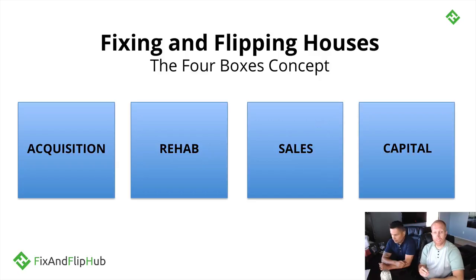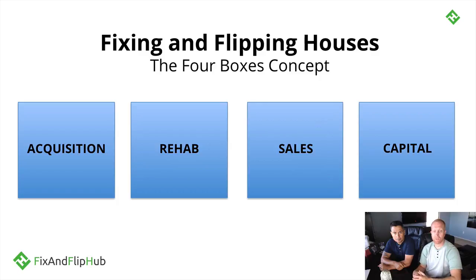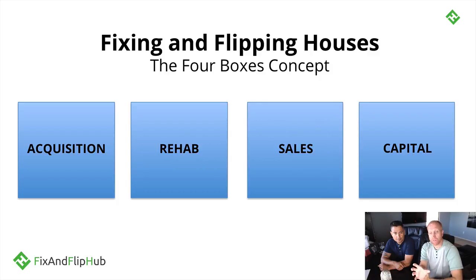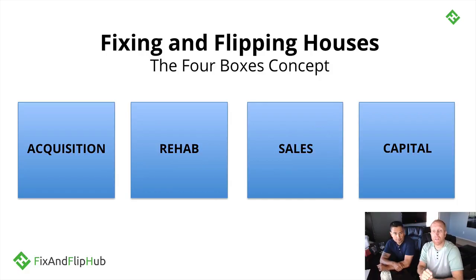You will probably be operating in all four boxes at the same time throughout the duration of a project, especially when doing multiple projects. A very successful fix-and-flipper in Phoenix had one person assigned to each box, almost like a division head. The very last year before he retired, he had done 1,200 rehabs in five years — it worked very well having this division of labor.